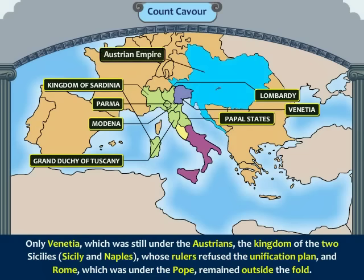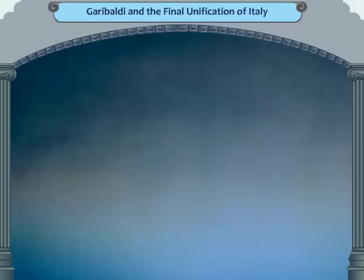Only Venetia, which was still under the Austrians, the Kingdom of the Two Sicilies — Sicily and Naples — whose rulers refused the unification plan, and Rome, which was under the Pope, remained outside the fold.